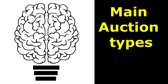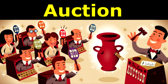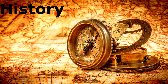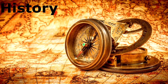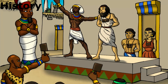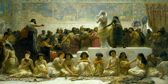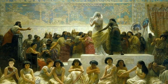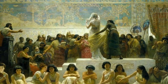Auction is a system where potential buyers place competitive bids on assets and services. Auctions have a long history, having been recorded as early as 500 BC. According to Herodotus, in Babylon, auctions of women for marriage were held annually.